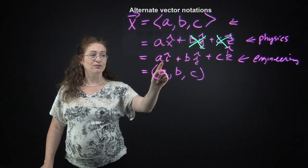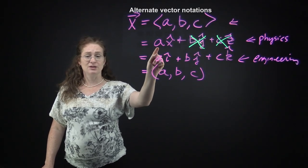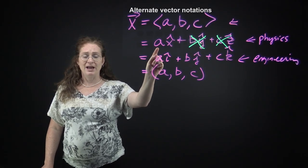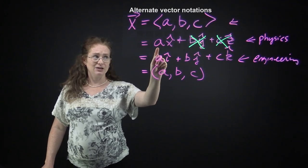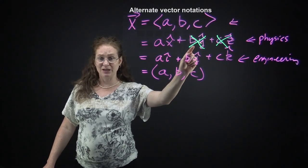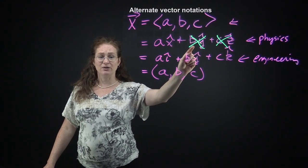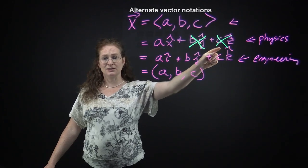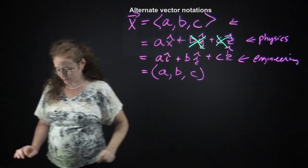These are unit vectors. This notation is saying: go A units in the X direction, B units in the Y direction, and C units in the Z direction.